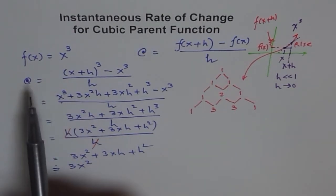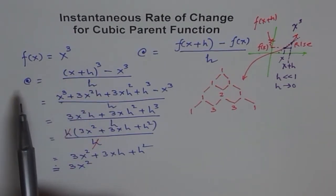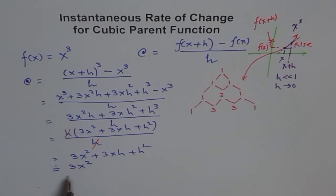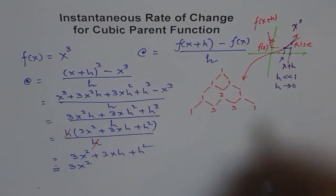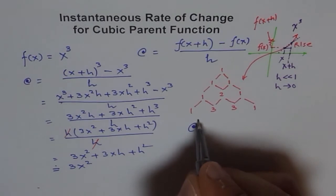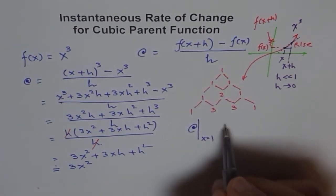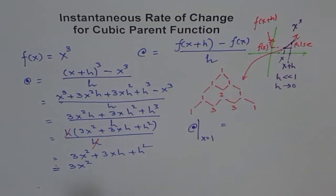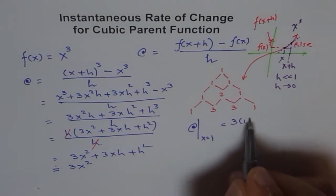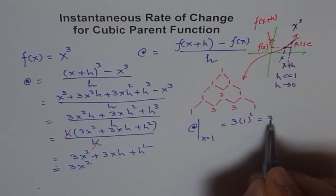The instantaneous rate of change of a cubic function can be written as 3x². Now, if I say find the instantaneous rate of change at x = 1, then what will you do? Simple, just plug in 1 here. You get 3 times 1² and your answer is 3.